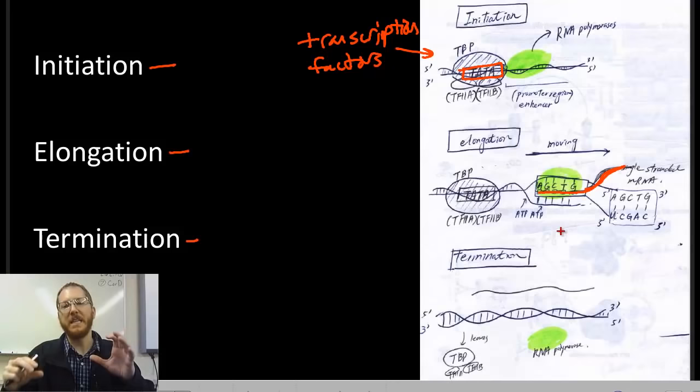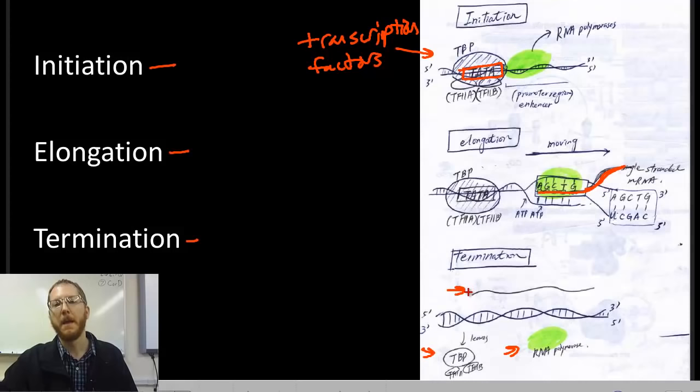This process continues until it reaches the terminator sequence, where everything breaks apart. We now have polymerase by itself, transcription factors separated, the mRNA separate, and the DNA back to normal. At the terminator sequence, everything separates.